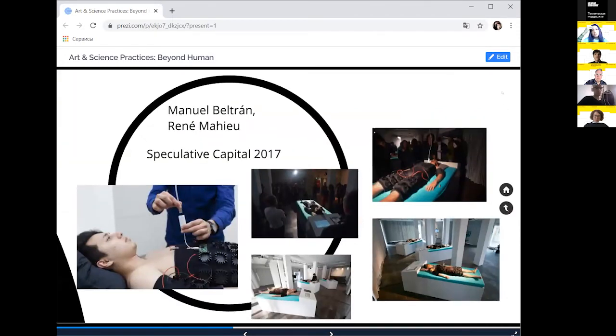The next project is Speculative Capital by Manuel Bertrand and René Maillot. Here again, artists are developing completely new relationships between human and machine, new connections between these agents and new dynamics of creation of value in a post-work scenario. The idea is to use the energy of the heat of human bodies. A single human body can produce 100 watts of heat. Normally that energy is wasted. Using thermoelectric generators, artists convert the temperature differential between the human body and the ambient into usable electricity. The generated electricity is fed to a computer that produces cryptocurrency.